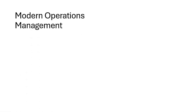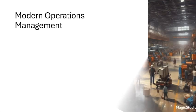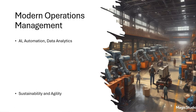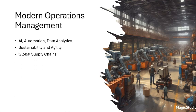Today's operations management is more than just managing production. It integrates cutting-edge technologies like AI, automation and data analytics. Companies not only focus on production, but also on sustainability, agility and customer satisfaction. The scope of OM now includes global supply chains, digital operations and innovations management.